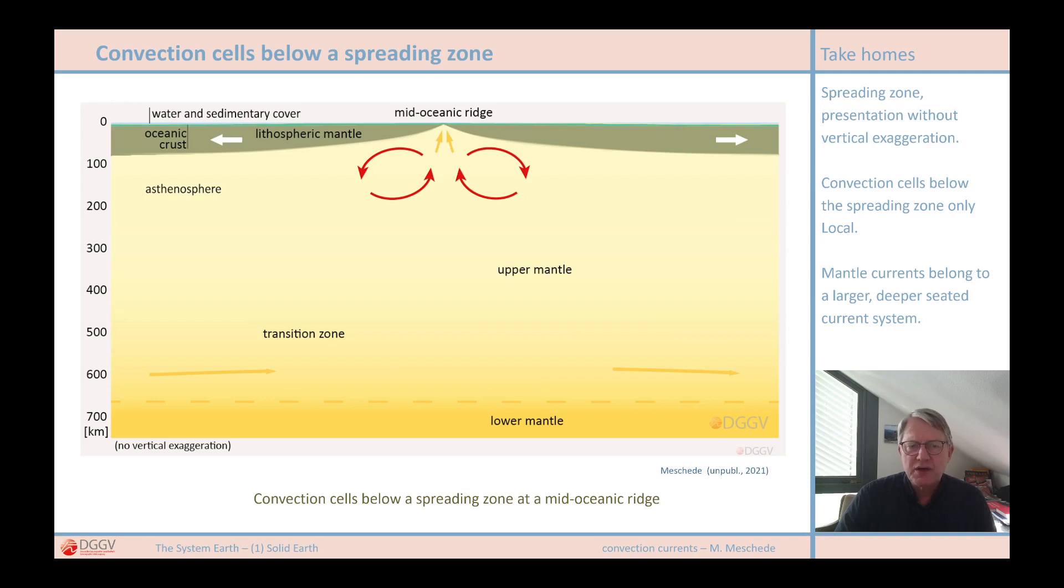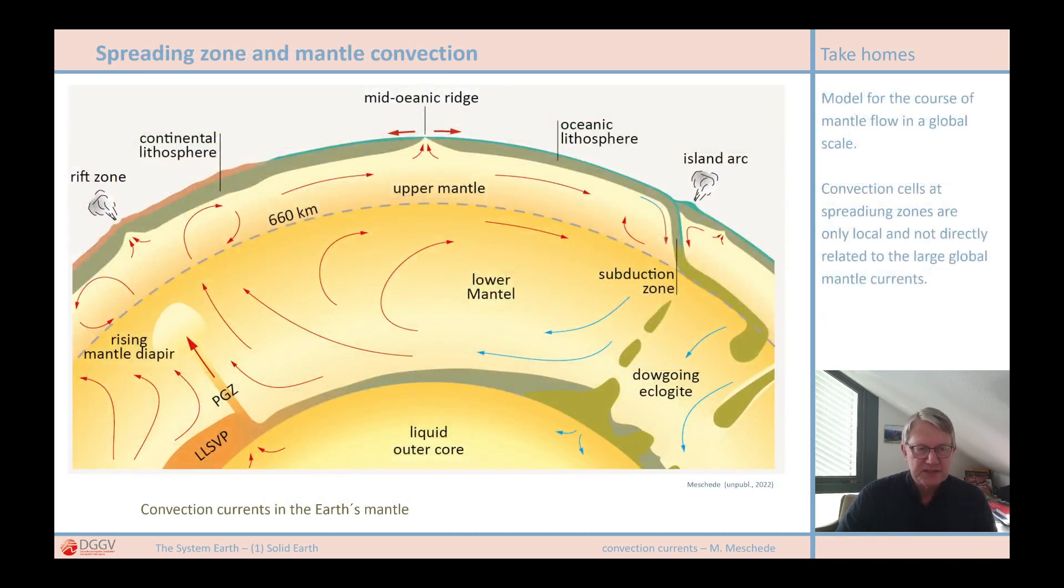In the next figures, I would like to show how convection beneath the spreading zone is interpreted today in the overall context of mantle flow. The spreading zones simply do not have the importance for the mantle flow as previously assumed. There is convection under the spreading centers, but local convection cells are forming that are located directly under the rift where the oceanic crust is formed. As we know, hot mantle currents come up there, as I showed in the previous video about the formation of the oceanic crust. But the related convection cells are small, locally limited and do not extend into the depths. I have drawn that very schematically in this figure. The large-scale, truly global mantle flow is only found in deeper areas in the mantle.